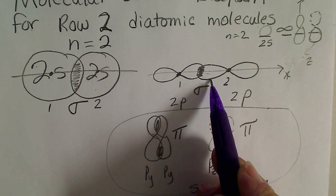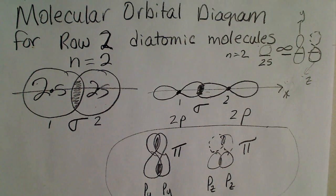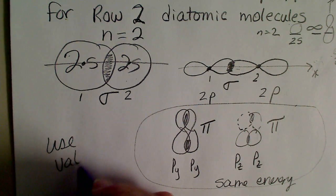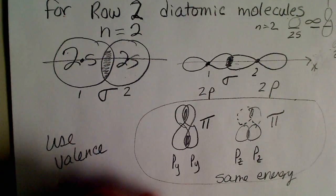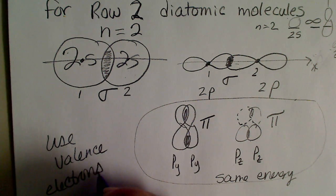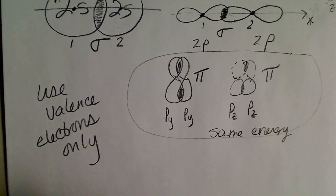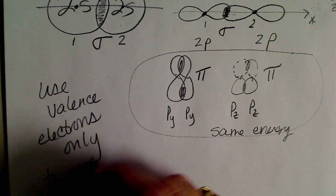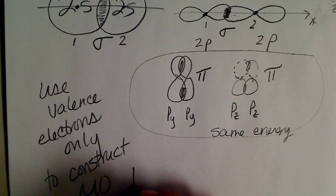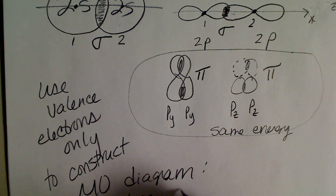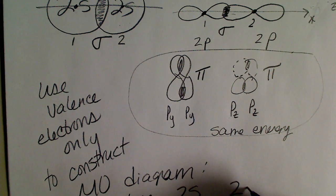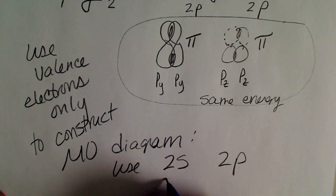Sigma bonding is more favorable, so it is going to be lower in energy. To draw the molecular orbital diagram we use valence electrons only, so we don't have to show the 1s overlap. We will only use the 2s and the 2p subshell to construct the MO diagram.